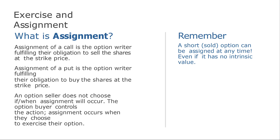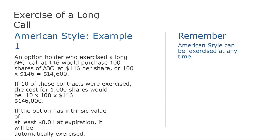Assignment is the counterpart for the option seller — the writer. When assignment occurs, the option writer must fulfill its obligation: sell the shares at the strike price, or buy the shares at the strike price, depending on whether it's a call or a put. The option buyer controls when that action happens. A short sold option can technically be assigned at any time, but it's very rare for a buyer to exercise when there's no intrinsic value — it makes no sense if you've already lost money on the premium.